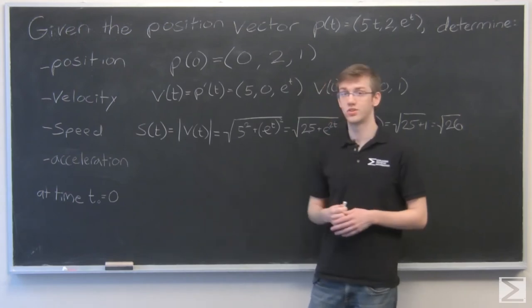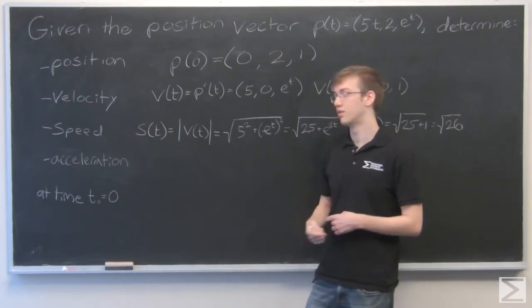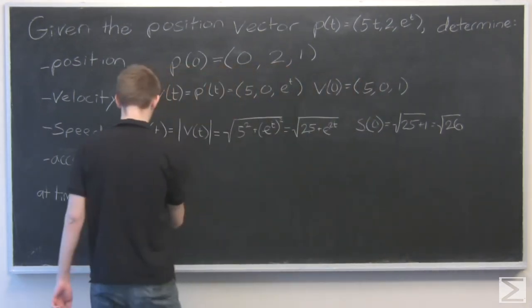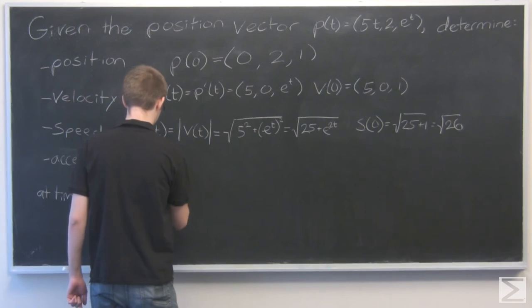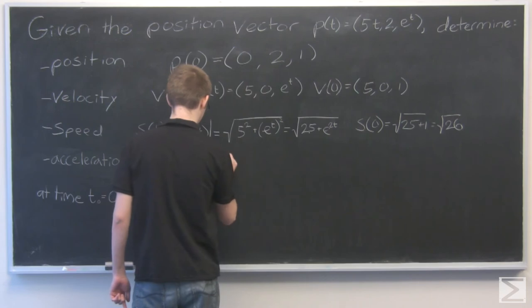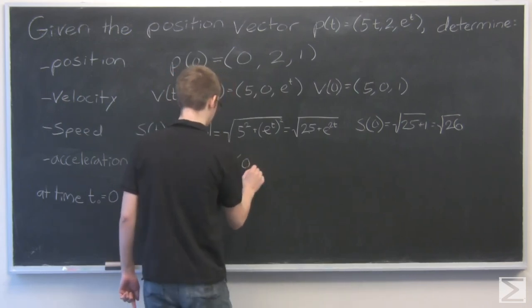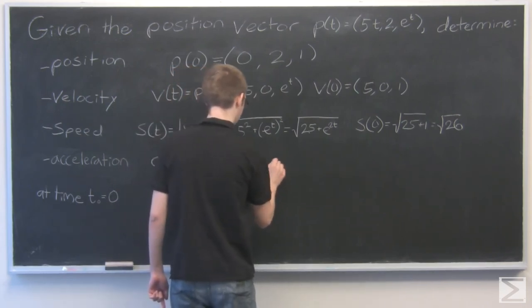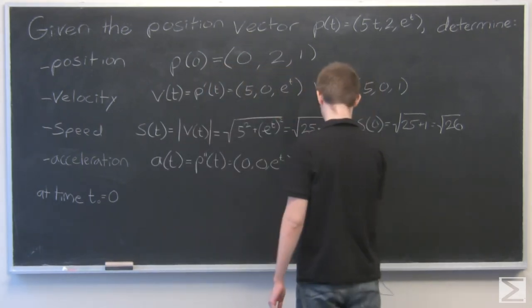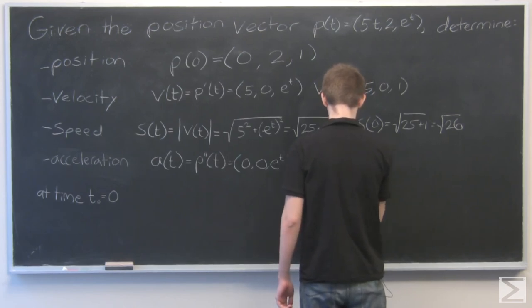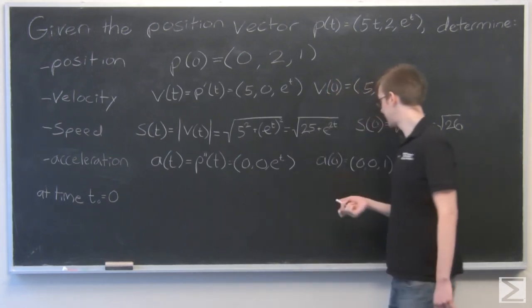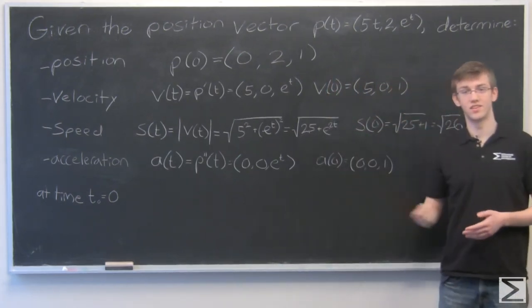Lastly is acceleration. And acceleration is just the derivative of velocity, which is the second derivative of position. So plug in for 0. And you get acceleration is 0, 0, 1. So there you have it.